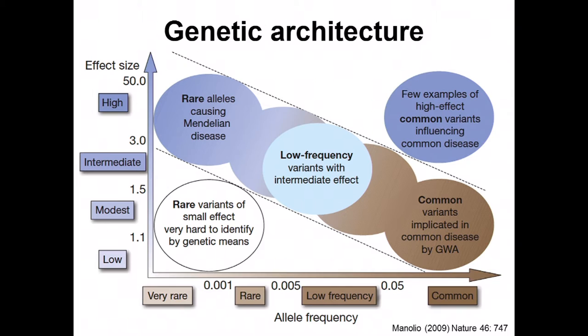If there were variants that were common and had strong effects on disease, they would be identified with this strategy — there just aren't very many of them. As we move into talking about sequencing-based studies, we move on this plot towards lower frequency variants that can be detected once they are analyzed.